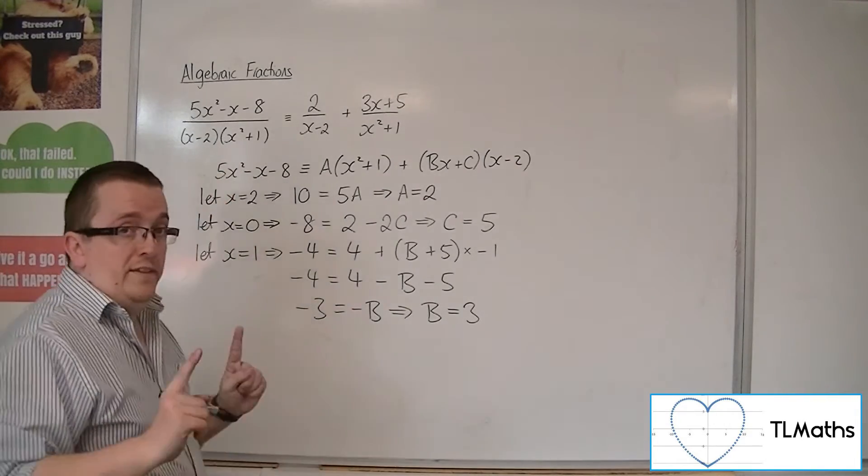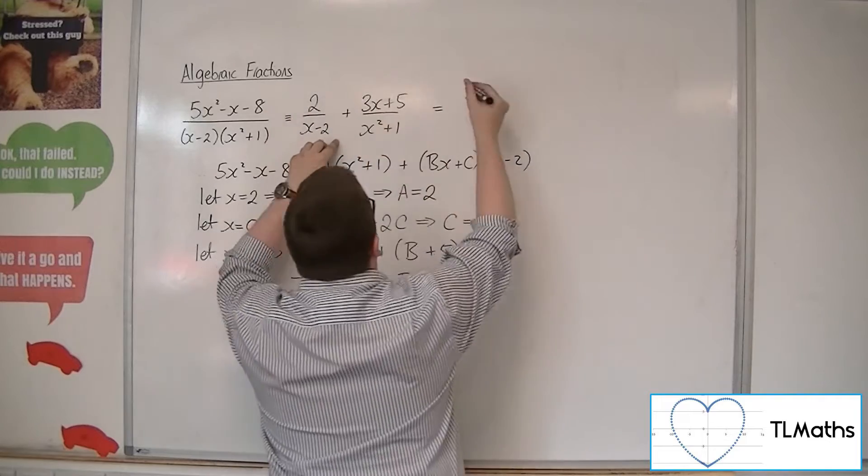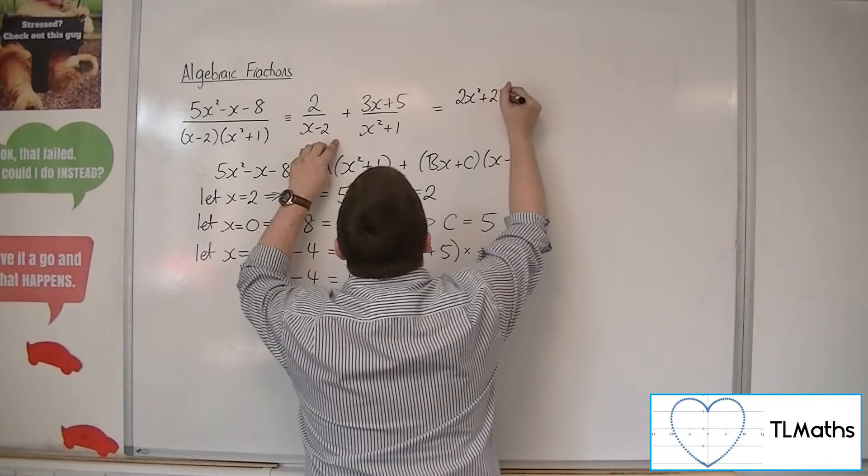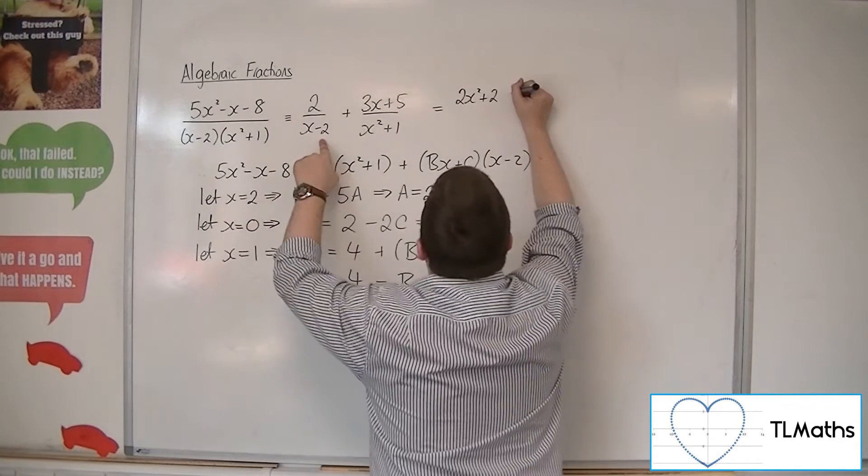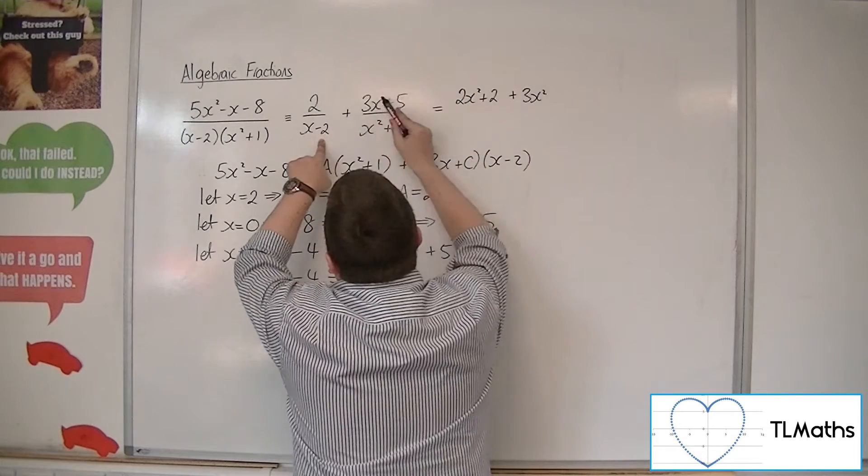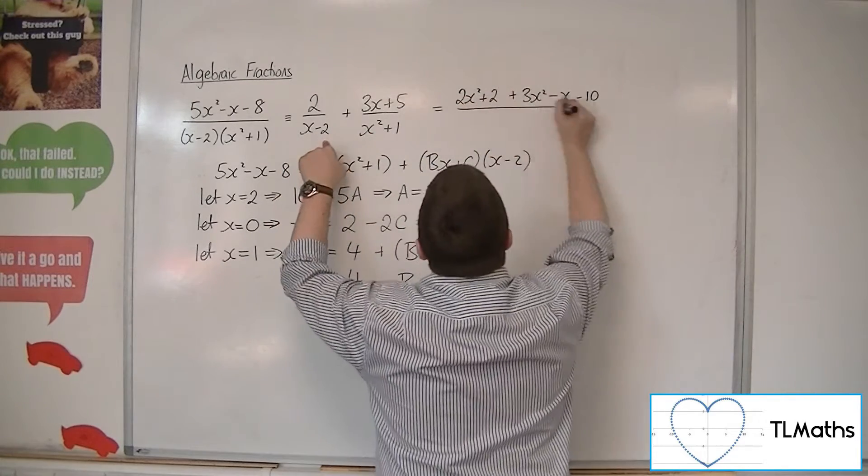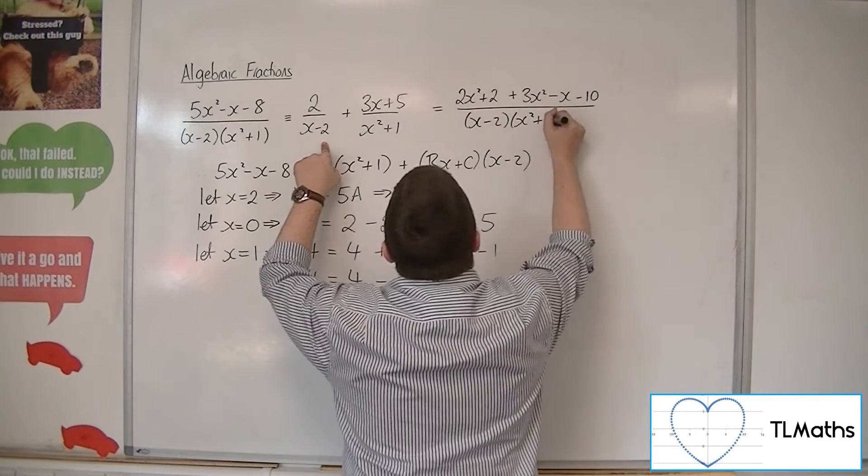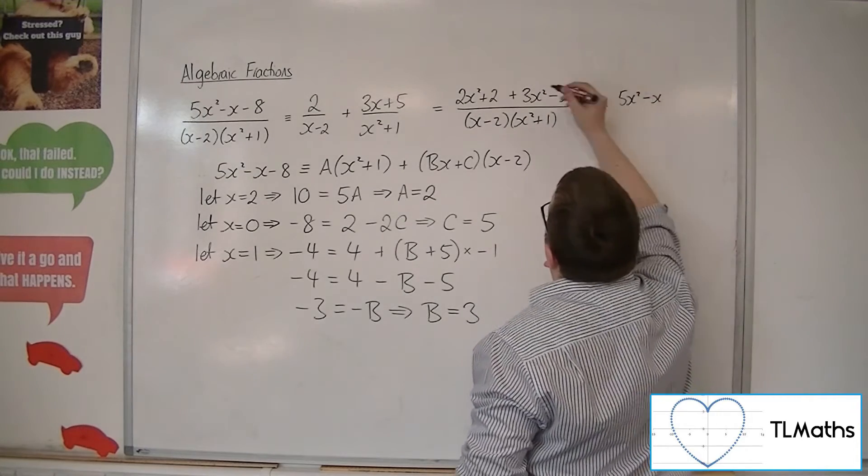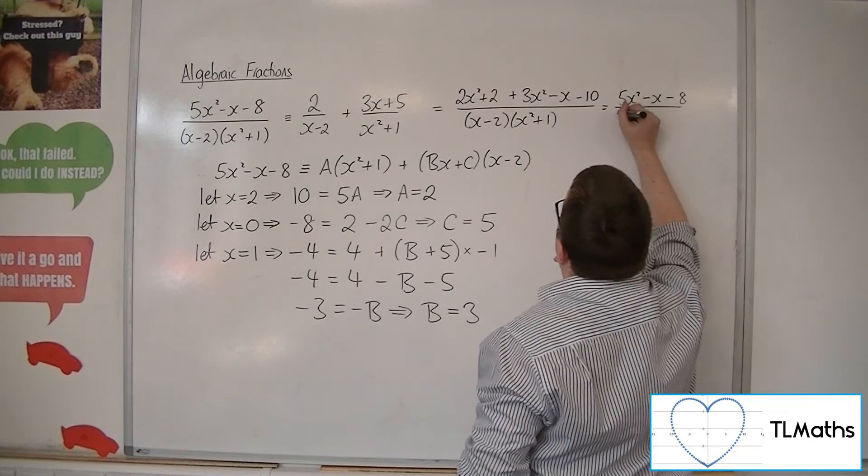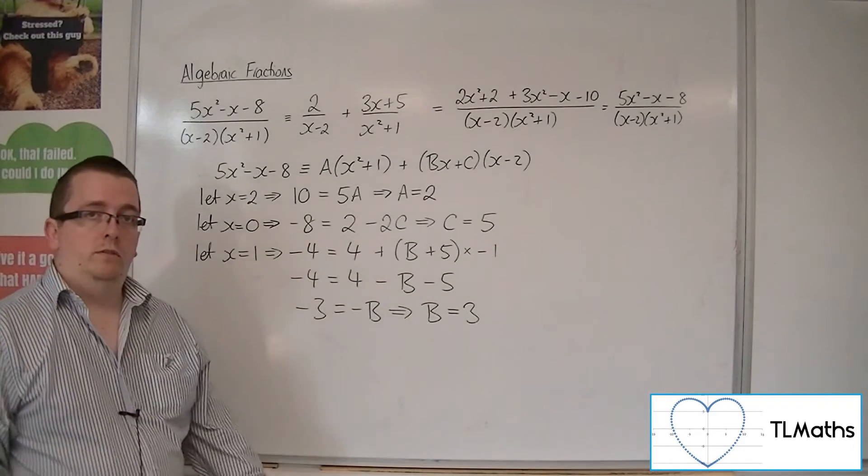So it might be a good idea to check that this is the case. So if we multiply both sides by the x squared plus 1, so cross multiply, so 2x squared plus 2. I'm going to do the x minus 2 times 3x plus 5. So x minus 2 times 3x plus 5 will be 3x squared. We're going to get a minus 6x and a plus 5x, so minus x and we're going to get 5 times minus 2, so minus 10 over x minus 2 x squared plus 1. So we get 2x squared plus 3x squared is 5x squared minus x and 2 take away 10 is minus 8 all over x minus 2 x squared plus 1. So we can see that it's worked.